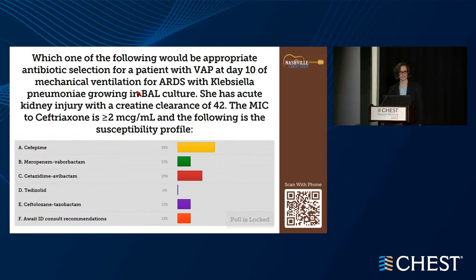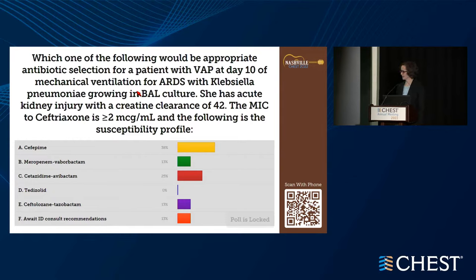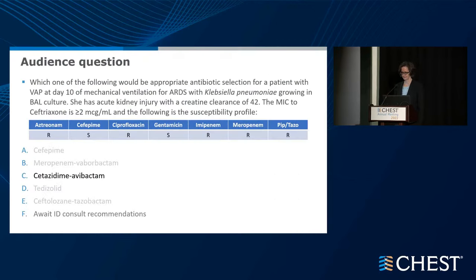Results show a good range of responses: the most chosen answer was cefepime, then ceftazidime-avibactam as number two, and meropenem-vaborbactam, ceftolazone-tazobactam, and awaiting ID consultation roughly tied. The correct answer, as we'll go through in the talk, would be ceftazidime-avibactam — or awaiting ID and antibiotic stewardship team recommendations would also be acceptable.